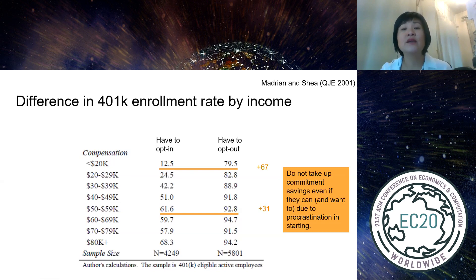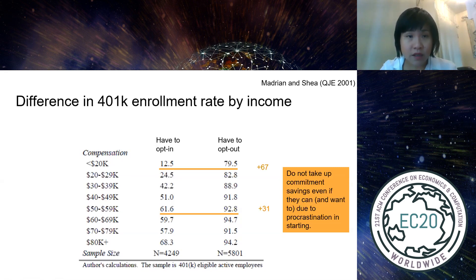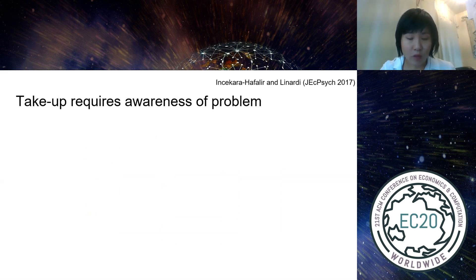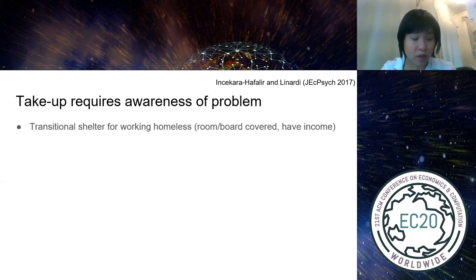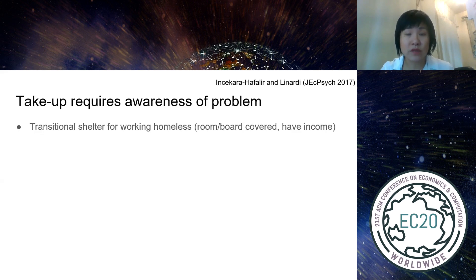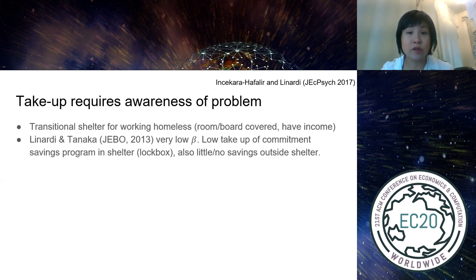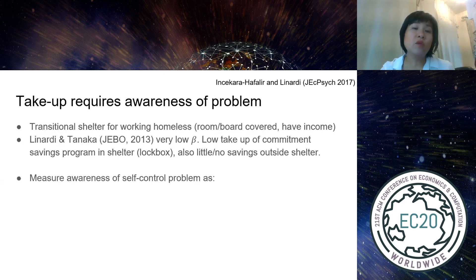We did a study — myself, Elif Shakara, and Hafalair — published in the Journal of Economic Psychology — at a transitional shelter for the working homeless. Clients had income with room and board covered. We knew from prior work that they had very low beta, there was very low take-up of the shelter savings program, and they had little savings outside the shelter. We wanted to know whether awareness of a self-control problem affects take-up.